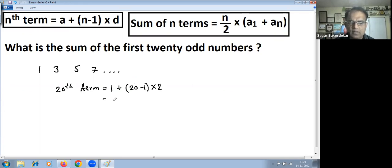So that is 1 plus 19 into 2. 19 into 2 is 38 plus 1, which is 39. So we know now first term, last term, so you can use this formula to calculate sum.